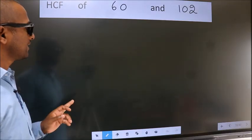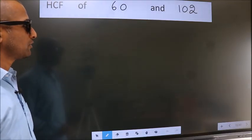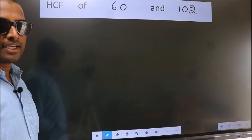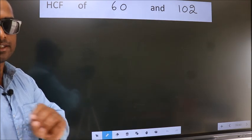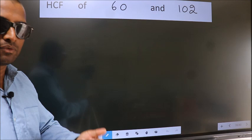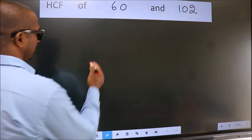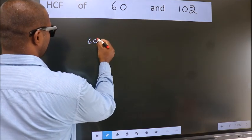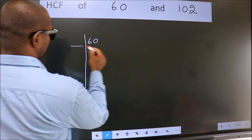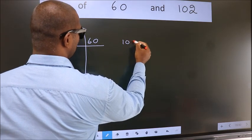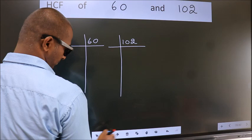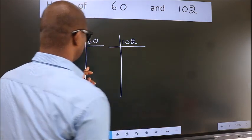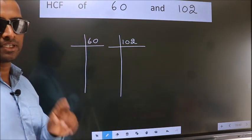HCF of 60 and 102. To find the HCF, we should do the prime factorization of each number separately. What I mean is, 60 here, 102 here. This is your step 1.